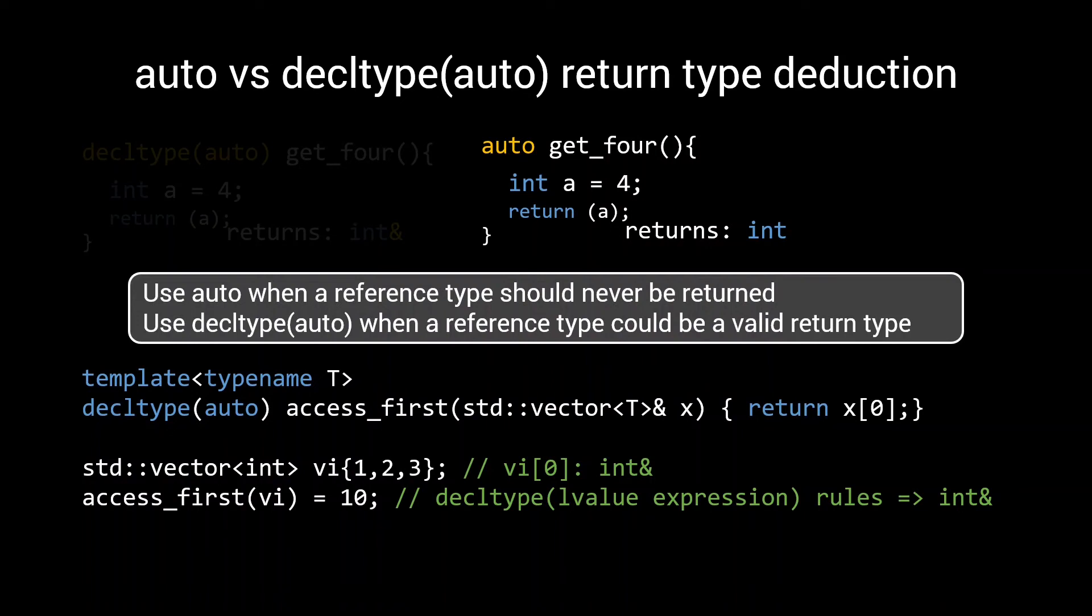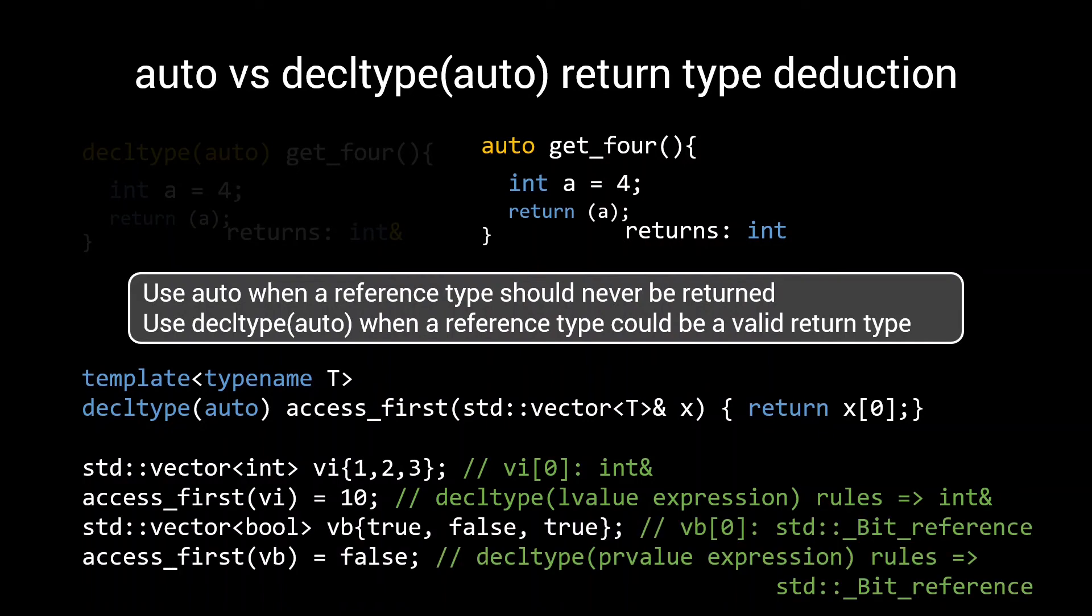And when using this same accessFirst function with a vector of booleans, we see that the prvalue expression rules get triggered. This is because the subscript operator of a vector of bool returns an instance of a proxy object, namely the standard bit reference. This is a prvalue, hence the deduced return type for accessFirst is also a standard bit reference. Decltype auto only deduced to a reference type when the return type was a reference type. Exactly as intended.